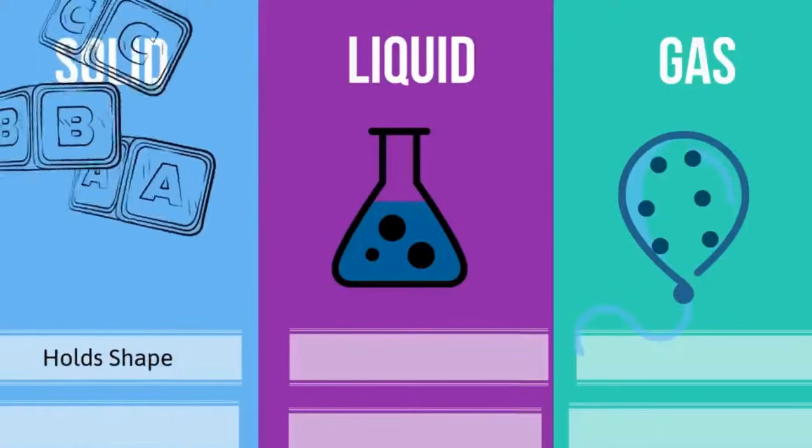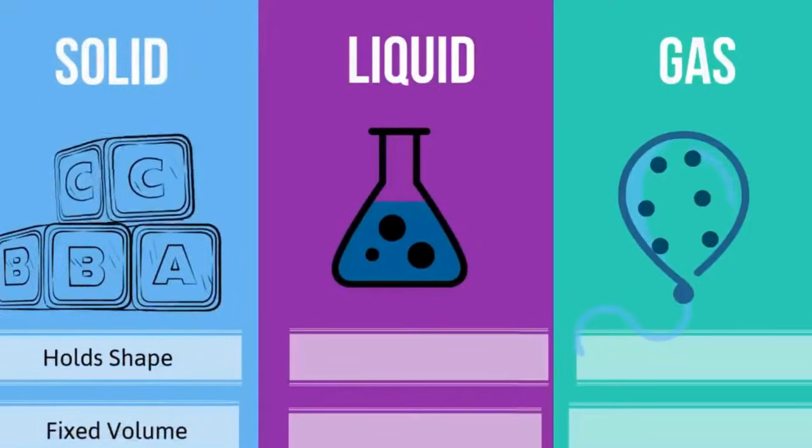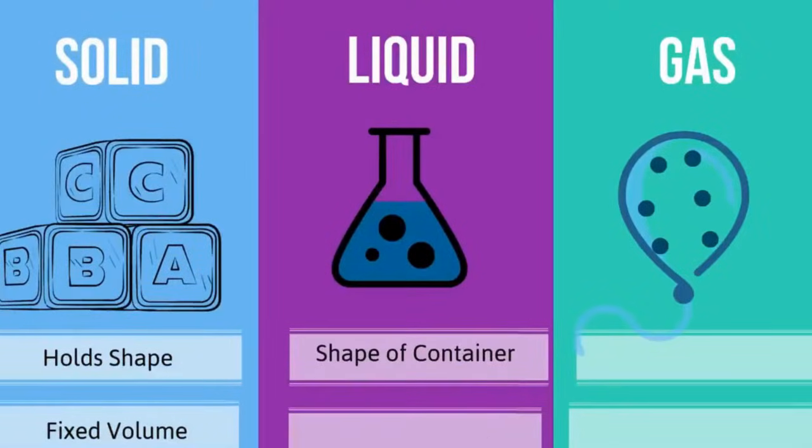A solid holds its shape and has a fixed volume. A liquid takes the shape of the container and has a fixed volume. A gas takes the shape of the container but has the volume of the container.